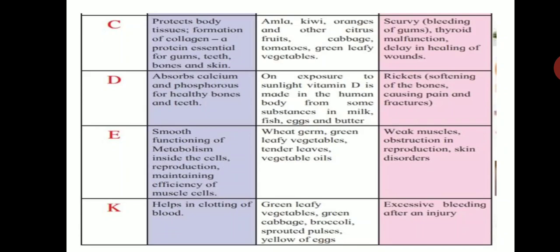All vitamins are necessary for our body; they play different roles. Their sources include citrus foods, green leafy vegetables, milk and milk products, and more. We need to consume all macro and micronutrients in the required quantities. Consuming them in proper proportions is called a balanced diet. In the next class, we will discuss the concept of balanced diet, malnutrition, and adulteration of food.